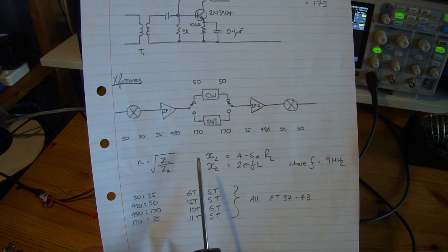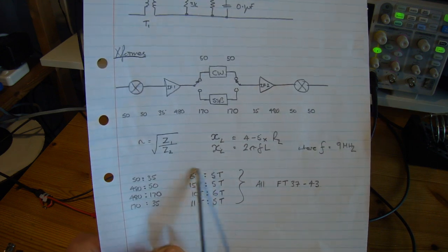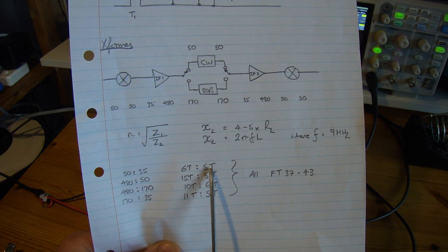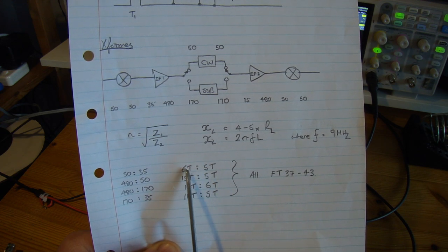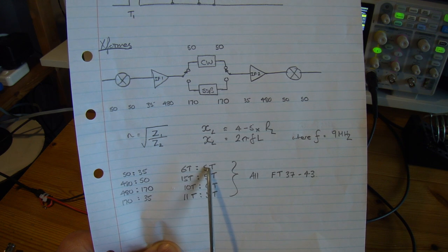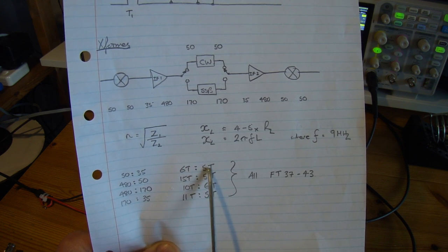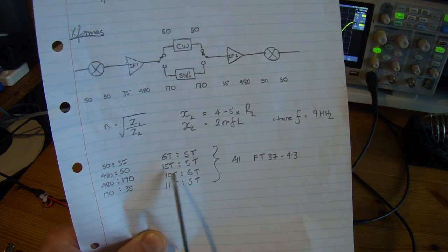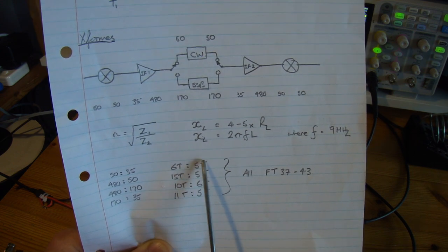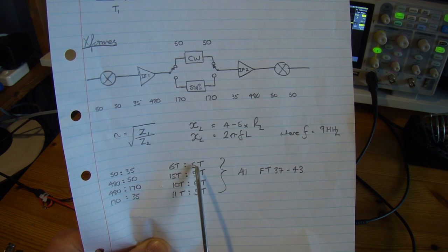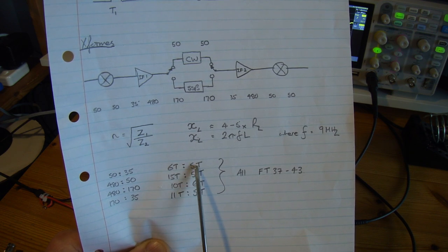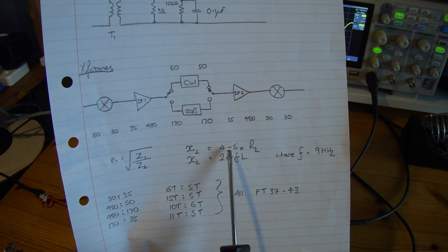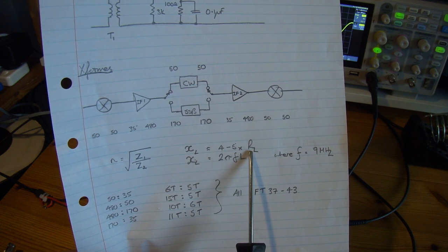The other rule of thumb that I am using is for the smaller winding. For this 50 to 35 ohms it turns out to be six turns to five turns. Why did I choose six turns and five turns? I take the smaller of the turns, so obviously five is less than six. I want to make sure that the inductive reactance of that smaller winding is approximately equal to or certainly greater than four to five times whatever the load is attached to that smaller winding.